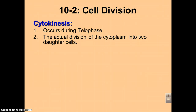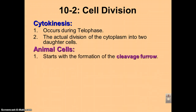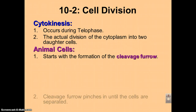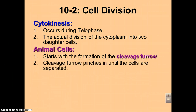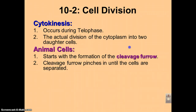Essentially it's like the fission you had in prokaryotic cells. In animal cells, cytokinesis is identified with the formation of a cleavage furrow. The word cleavage means to cut, and furrow means to make a ditch or to pinch in. This pinching in will continue until the cell is completely pinched in two. We have a picture coming up that will show this much more clearly.